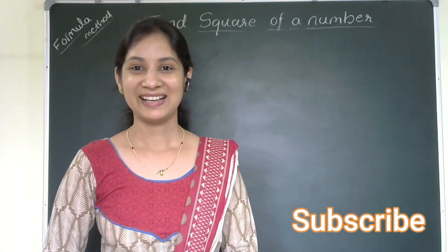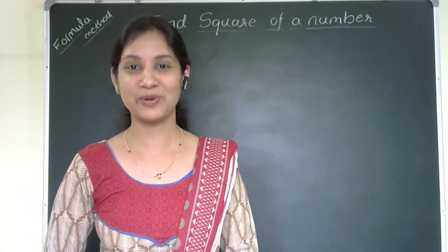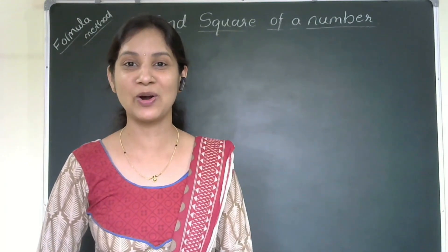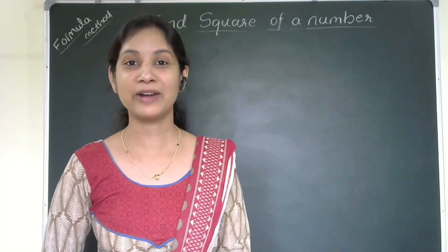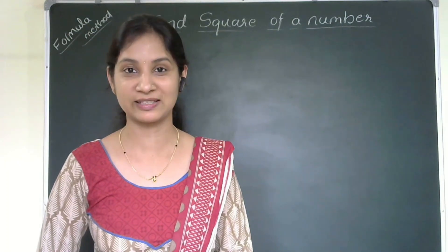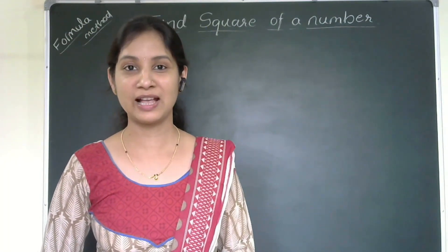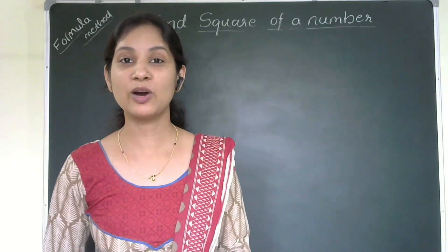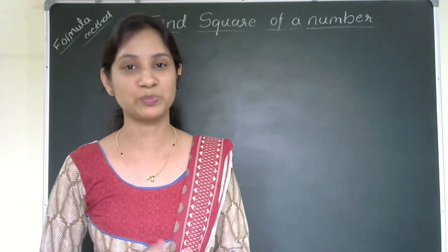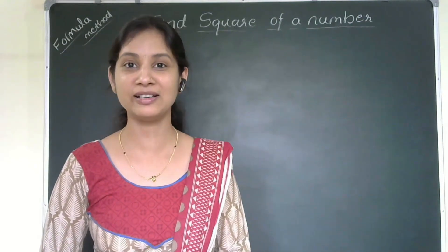Hello everyone, I hope you are all doing good. Welcome to Tricks for Maths. I hope you have seen videos on how to find out the square of a number using two different tricks — using the crisscross method as well as using the formula (a + b)² = a² + 2ab + b².